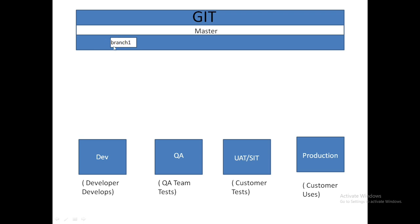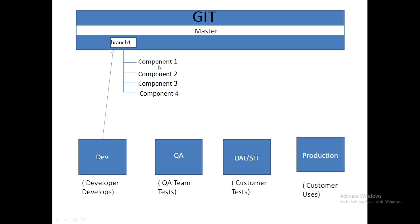For that purpose, you create your own separate branch inside Git. Let's call it Branch 1. From Dev, you push the code to that particular branch — not to the master branch. Inside this branch you can find all the components you have deployed: Component 1, Component 2, Component 3, Component 4, and so on. You can also see the code within each component — Code 1, Code 2, Code 3 — making it easy to find exactly what code was done for each component.